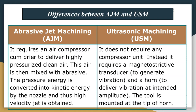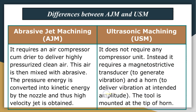Regarding equipment: abrasive jet machining requires an air compressor and dryer to deliver highly pressurized clean air, which is mixed with the abrasive; the pressure energy is then converted into kinetic energy by the nozzle to obtain the high-velocity jet. In ultrasonic machining, no compressor is required; instead, it uses a magnetostrictive transducer to generate vibration and a horn to deliver the vibration at the intended amplitude, with the tool mounted at the tip of the horn.